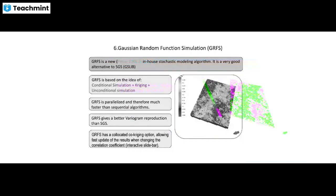Now we come to Gaussian Random Function Simulation (GRFS). It is a new stochastic modeling algorithm and a very good alternative to SGS. GRFS is based on conditional simulation, is parallelized and therefore much faster than the sequential algorithm, and gives better variogram reproduction. The GRFS co-located option allows fast updating of results when the correlation coefficient changes, shown via an interactive slide bar on the right-hand side.